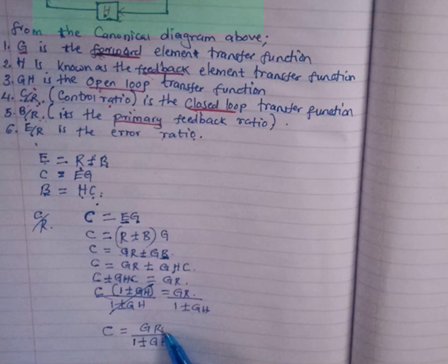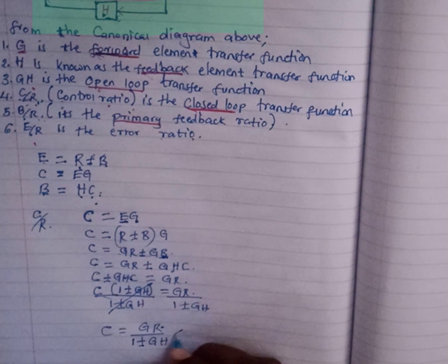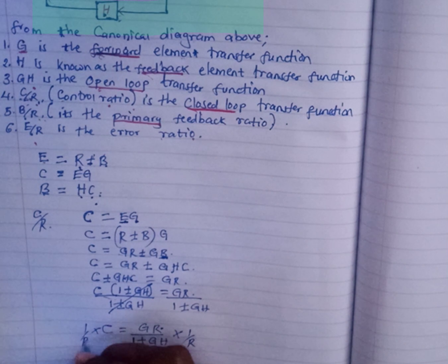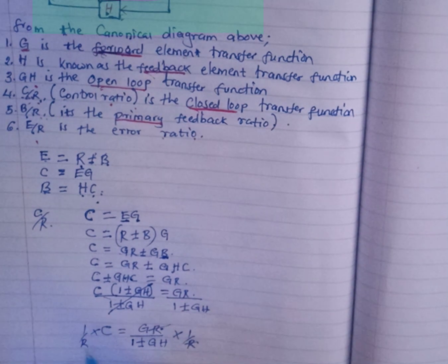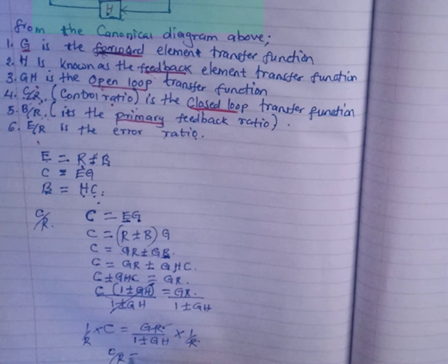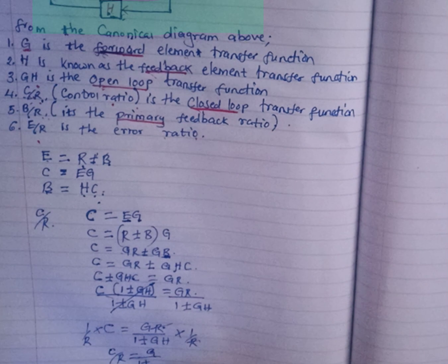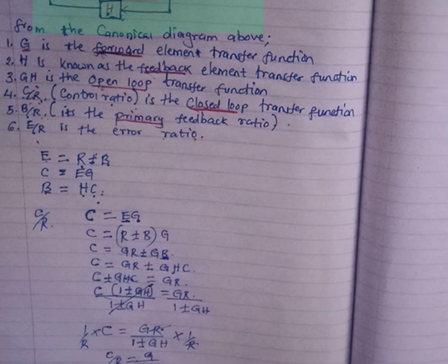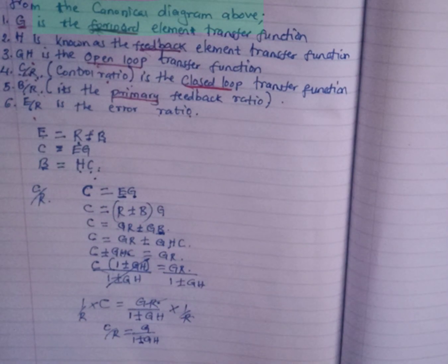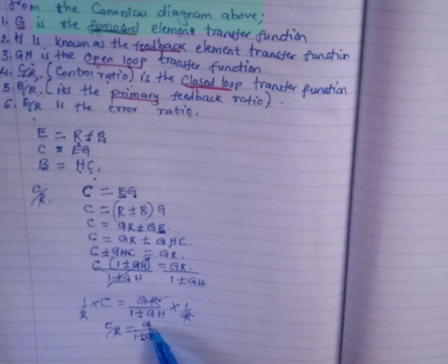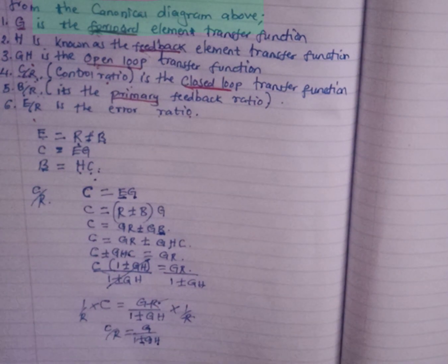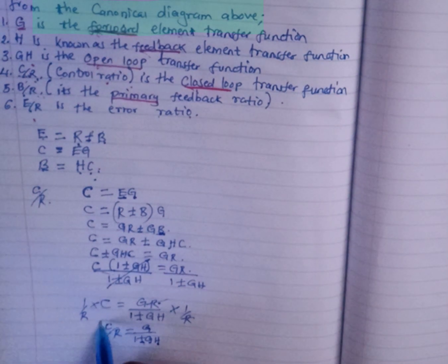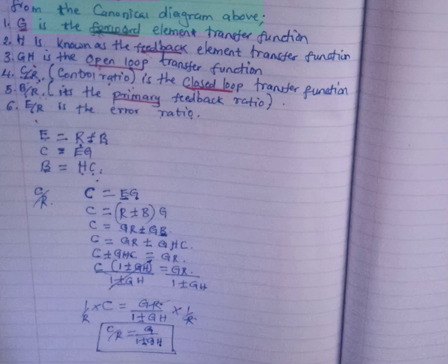To get C/R, I multiply both sides by 1/R so that the R's cancel, giving the control ratio: C/R = G/(1 ± GH). That is the control ratio, or closed loop transfer function — G (the forward path element) over 1 ± GH (where GH is the product of the forward and feedback elements). This is what you should master.